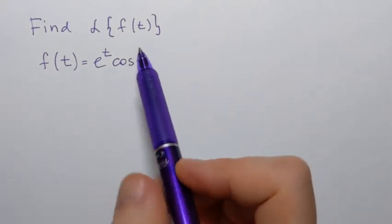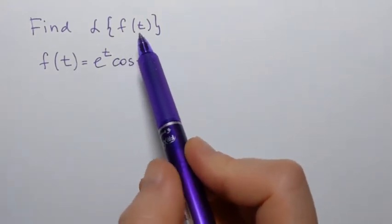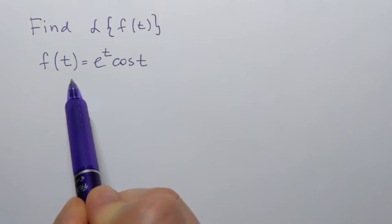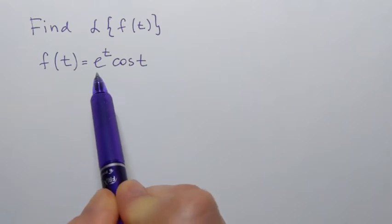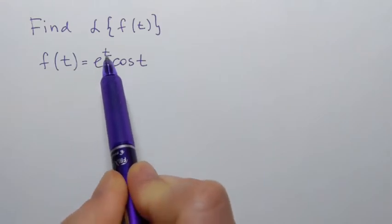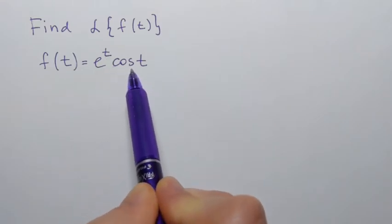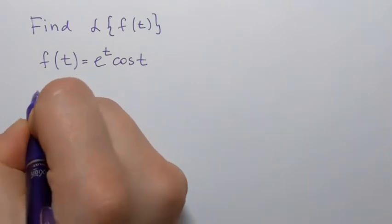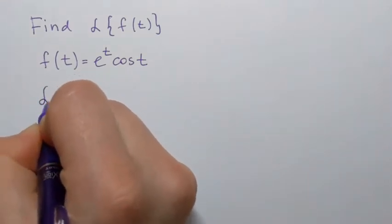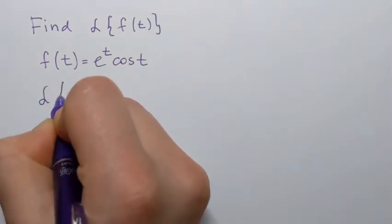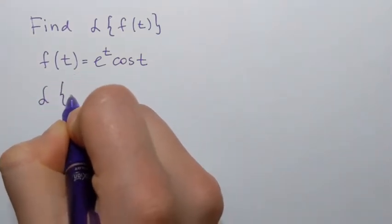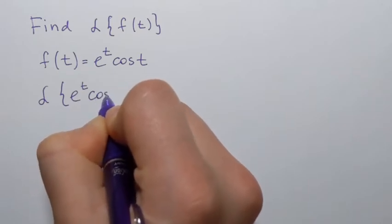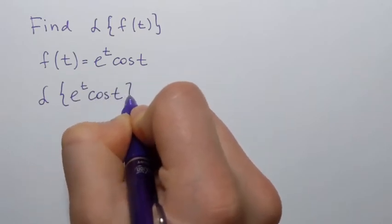We need to find the Laplace transform of the given function f. The function f is e to the power t times cosine of t. We need to obtain the Laplace transform of e to the power t times cosine of t.